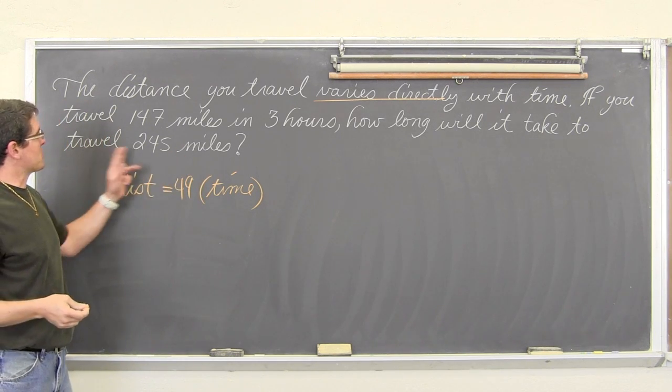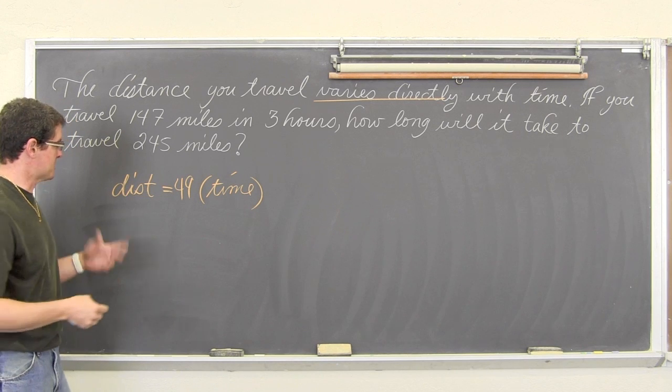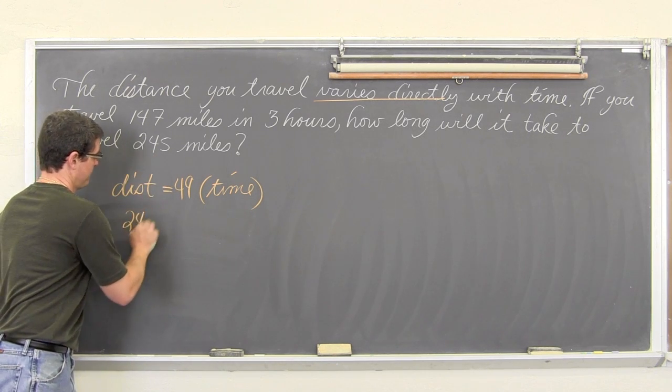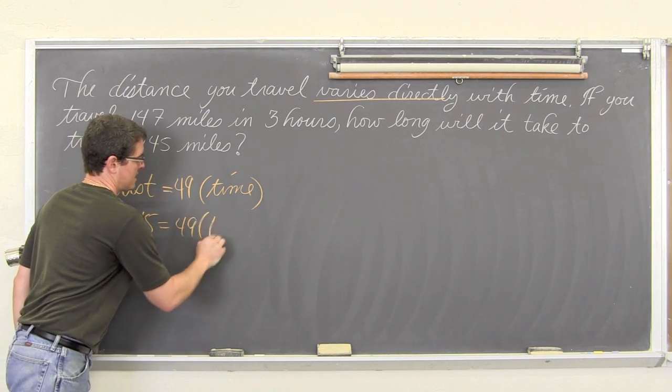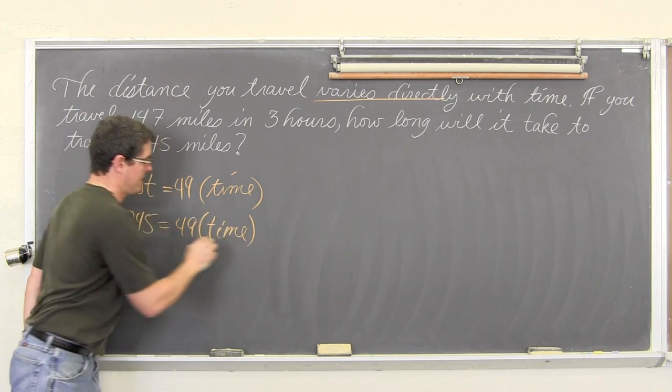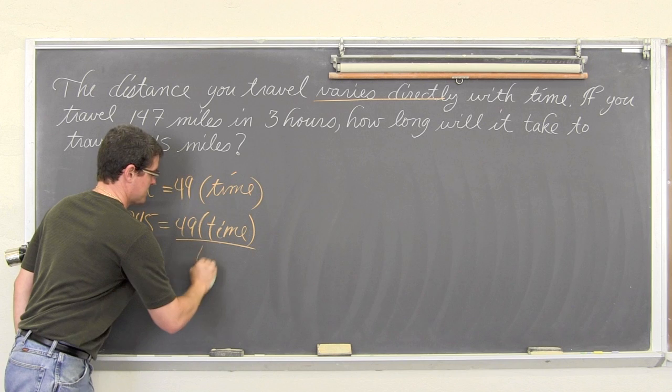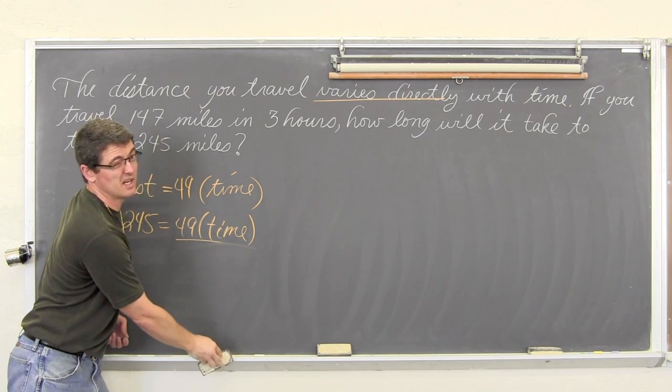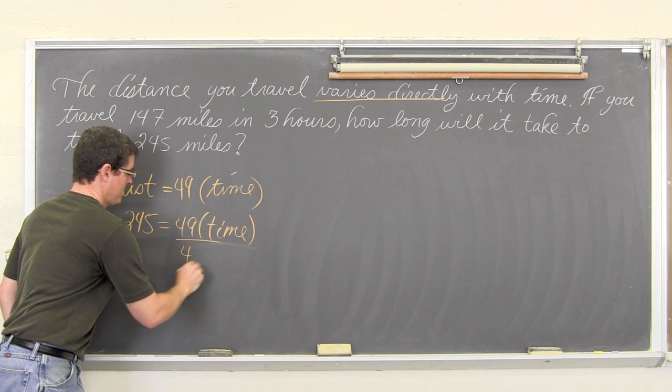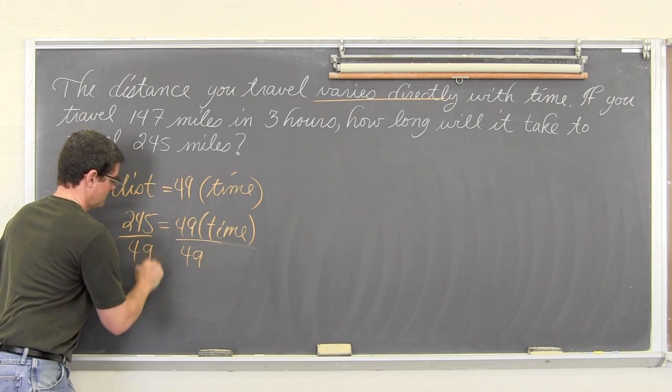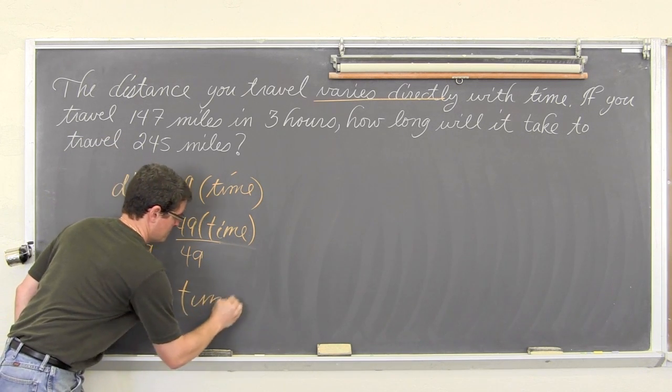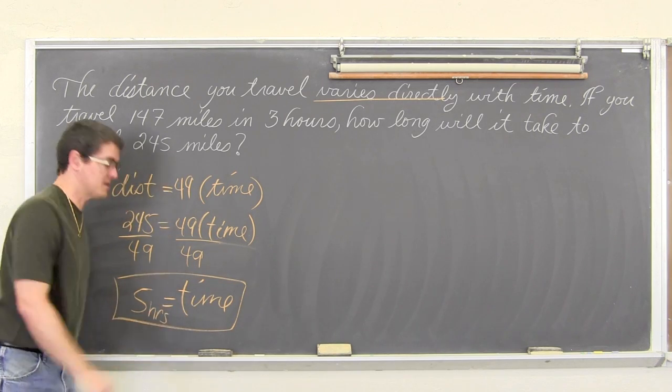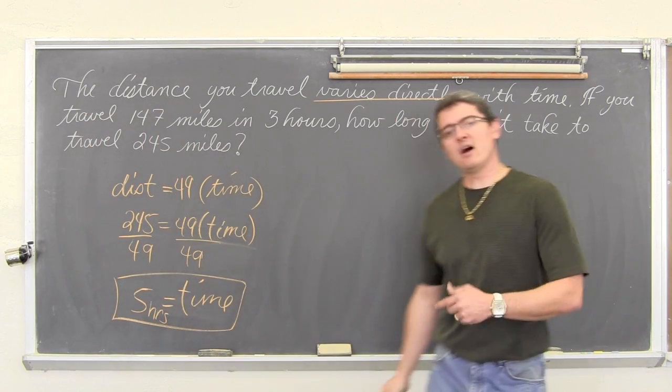How long will it take you to travel 245 miles? Alright, so again we are given a distance. So, 245 is equal to 49 times time. Divide both sides by time. Excuse me. We are trying to solve for time. Divide both sides by 49. Time is equal to 5 hours.